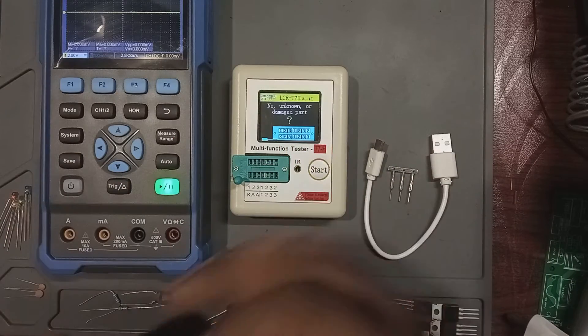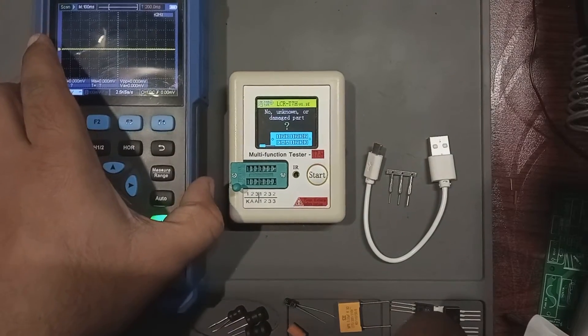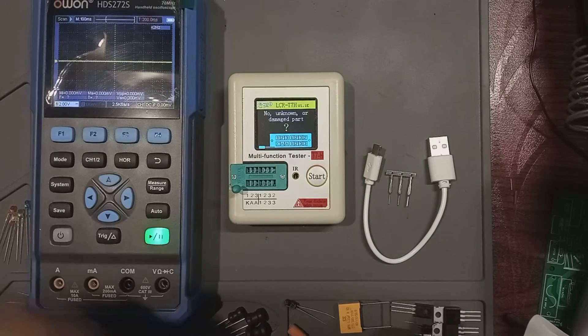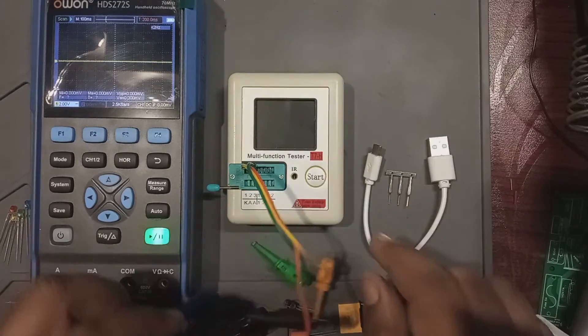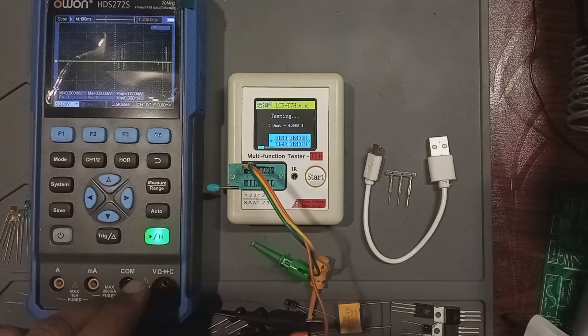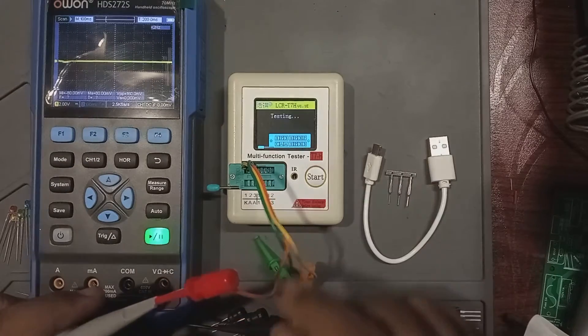For our oscilloscope settings, we have set it at 2 volts per vertical division. Each horizontal division represents a span of 100 milliseconds. When the jumper wires are connected to the multifunctional tester and the start button is pressed, visible pulses oscillate between positive and negative. Let us take a look at that again.